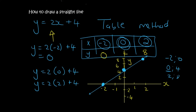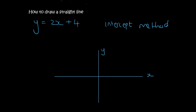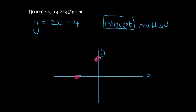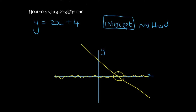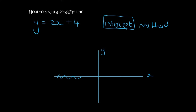A different way to do it is to use the intercept method. An intercept is the place where the line cuts the y-axis and where it cuts the x-axis. So we are going to find the intercepts — two points. On the x-axis, the y-values are always 0.